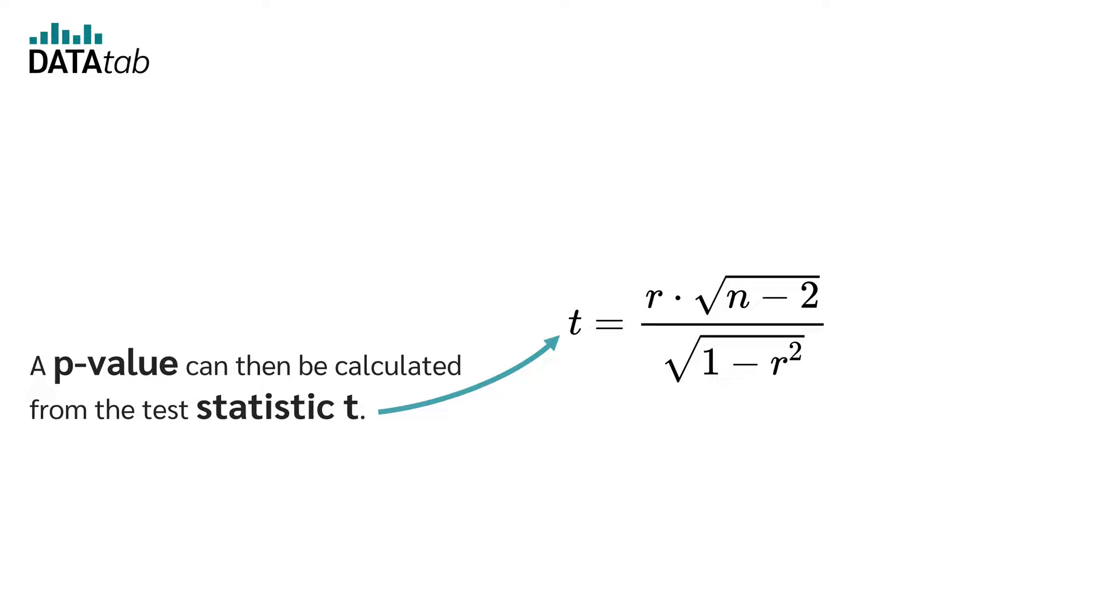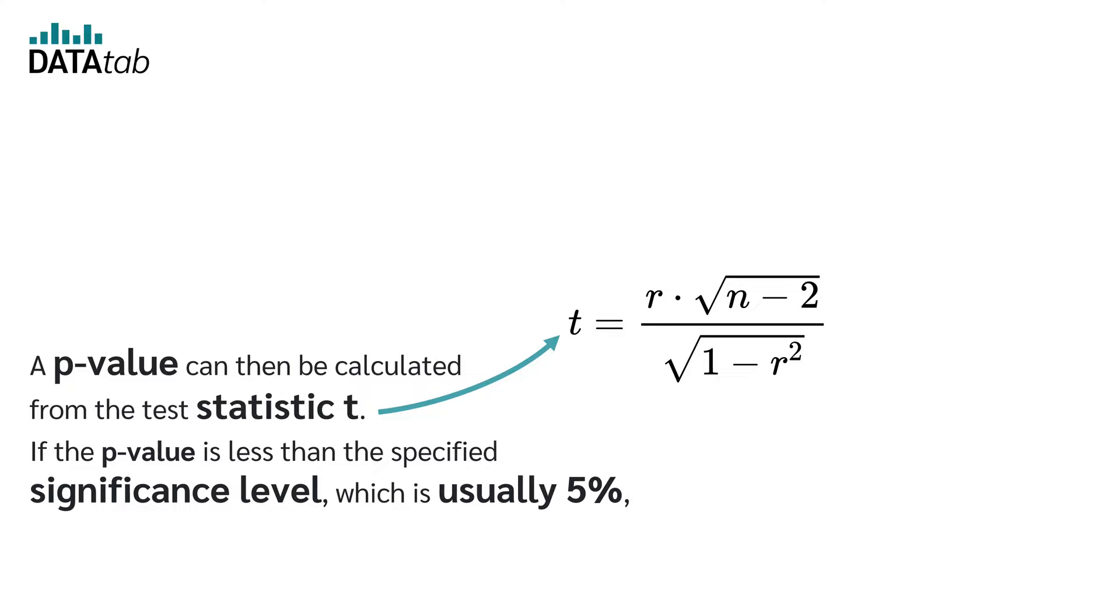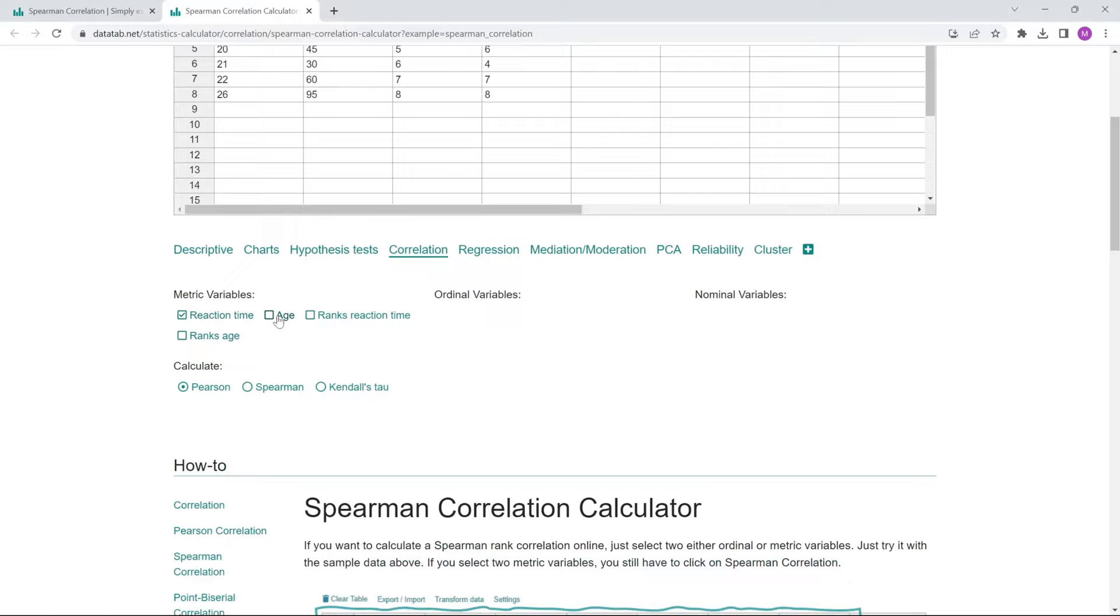A p-value can then be calculated from the test statistic t. If the p-value is less than the specified significance level, which is usually 5%, then the null hypothesis is rejected, otherwise it is not.